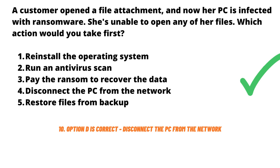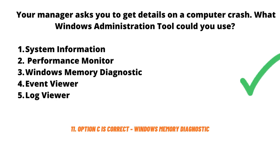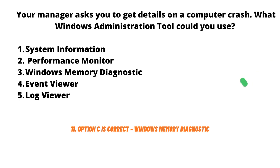Another question: your manager has asked you to get details on a computer crash. What Windows administration tool could you use? The five options are: system information, performance monitor, Windows memory diagnostics, event viewer, and log viewer. The correct answer is Windows memory diagnostics.